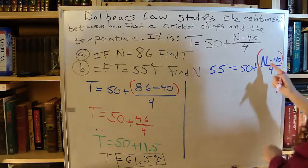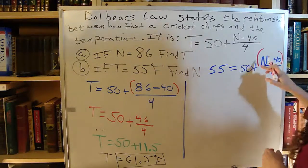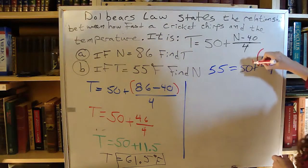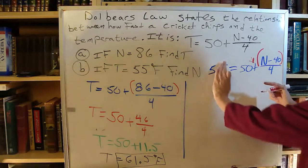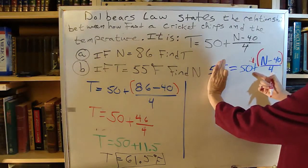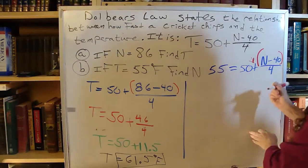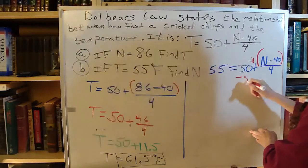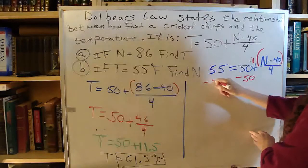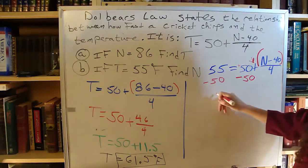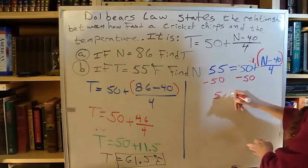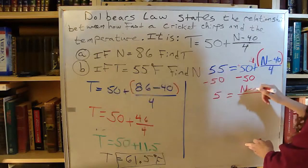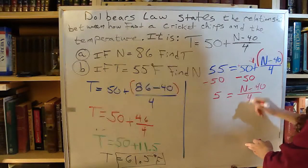Remember, you have that understood parenthesis on the top of the fraction there. So I'm looking at that plus sign. So I need to get rid of that 50 first. It's an understood positive number, so I'm going to subtract it. 55 minus 50 is 5, and that equals this giant fraction, N minus 40, all over 4.